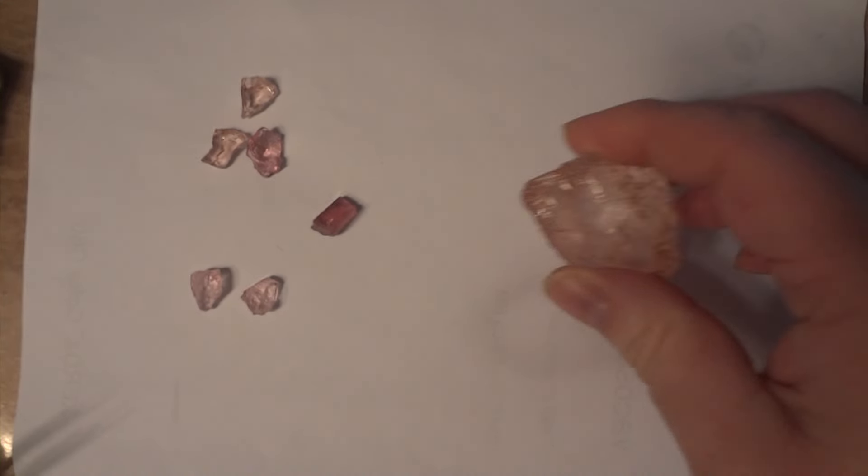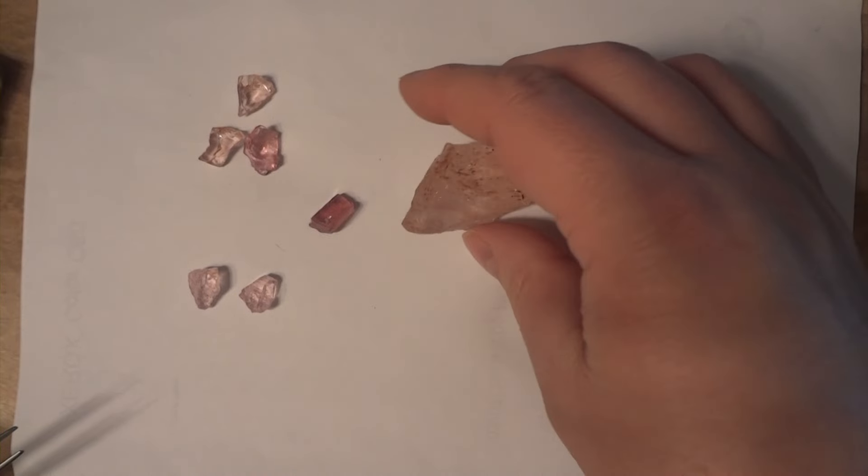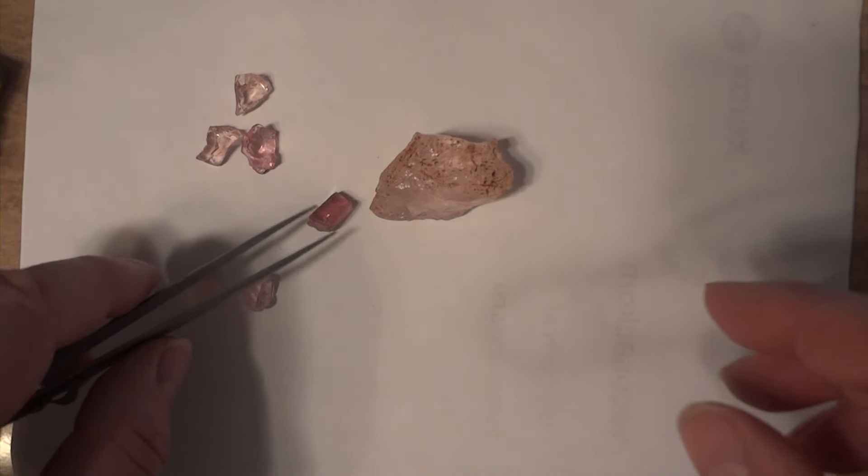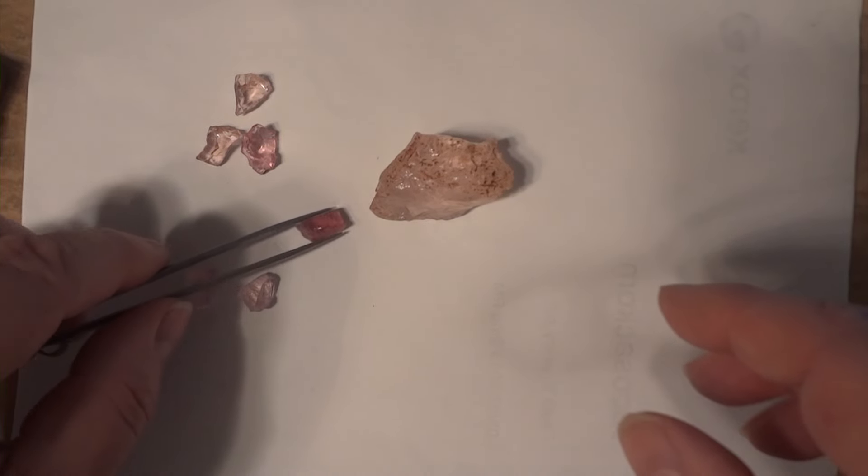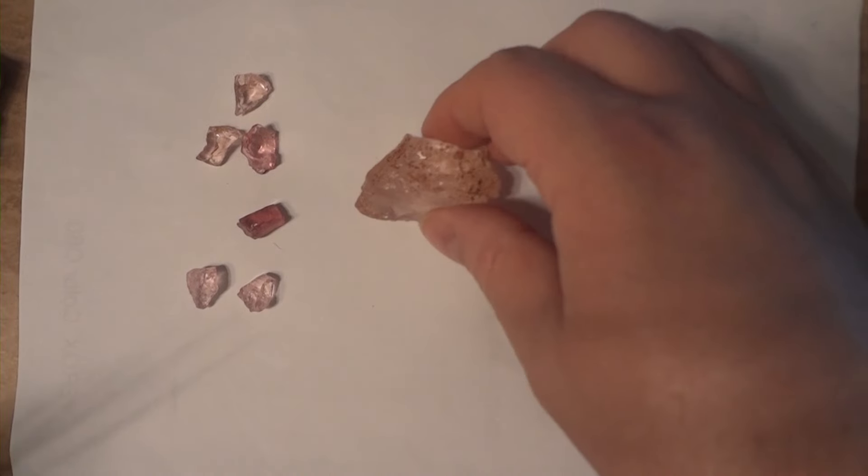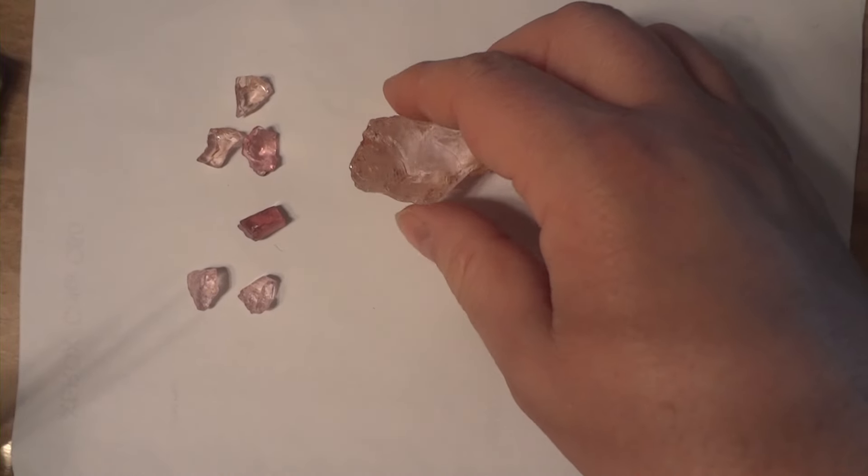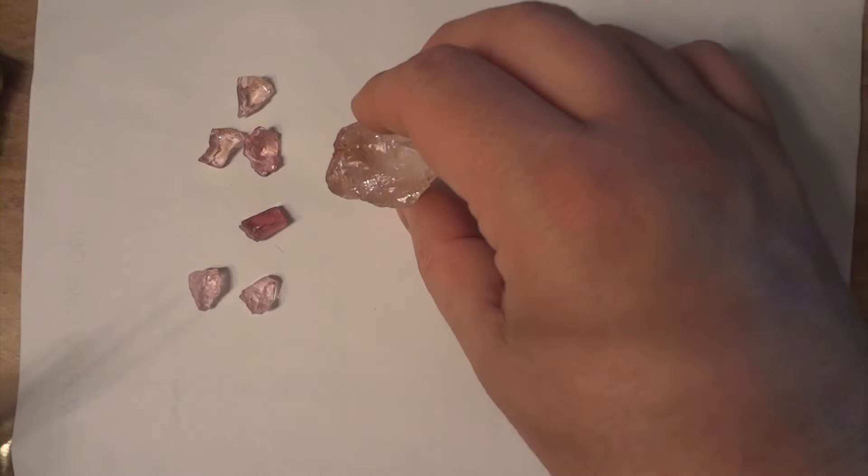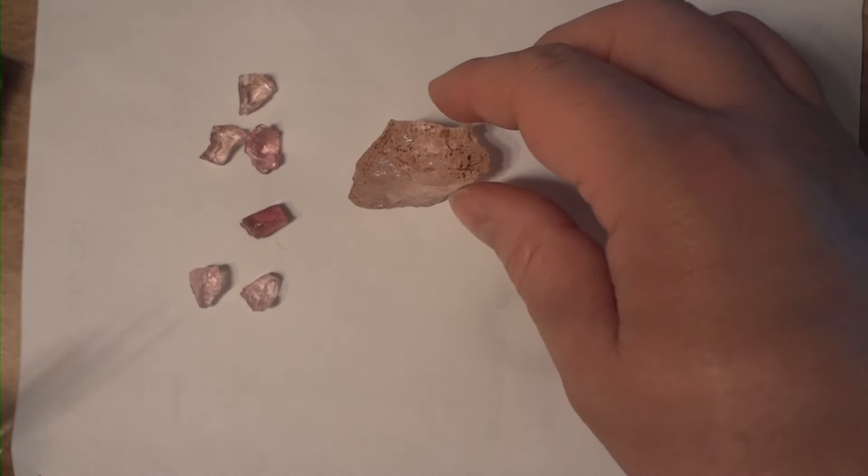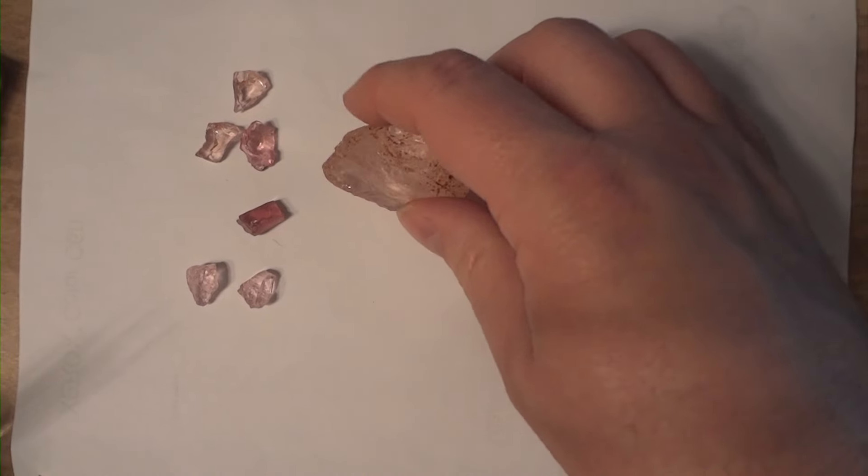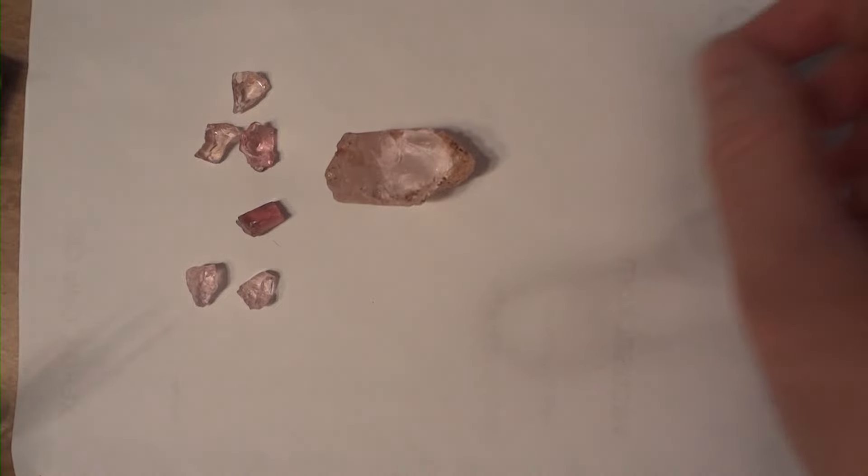I also found a nice piece when I was at gem hunting. Gem hunting at shows, not gem hunting in the mines. This is morganite. This was a piece of rough that one person was selling. And it's gigantic.